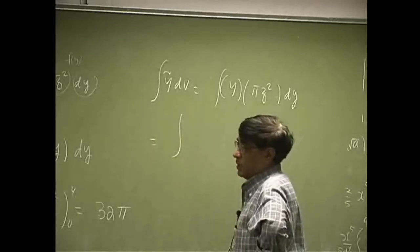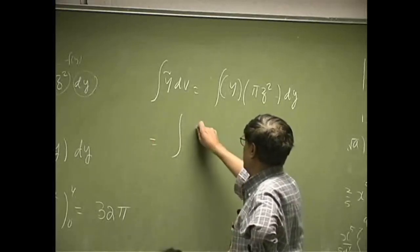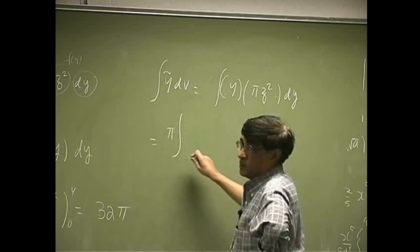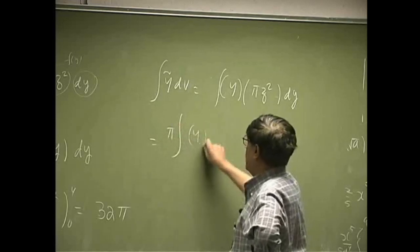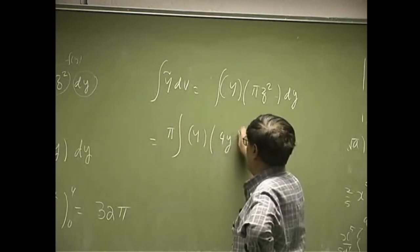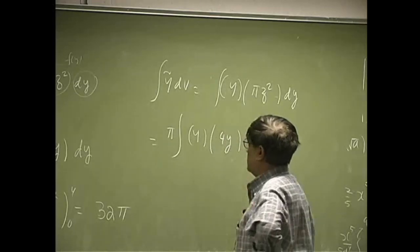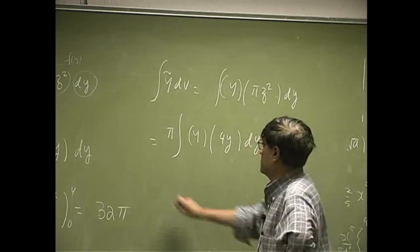So, this is going to be an integration. We take pi out of this. Then, we have y by itself, z is 4y and dy.